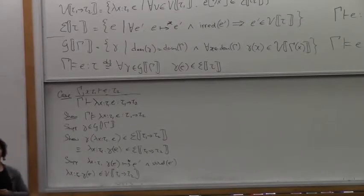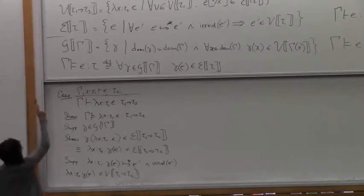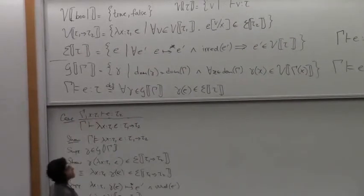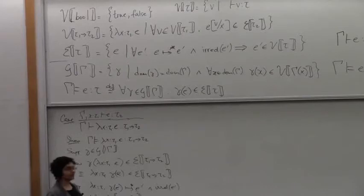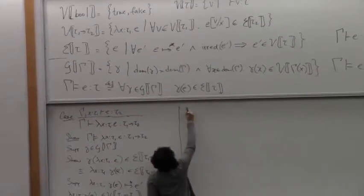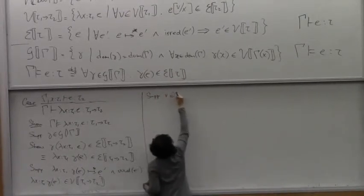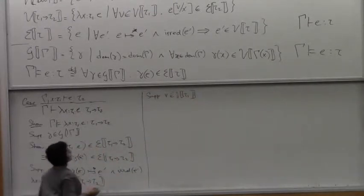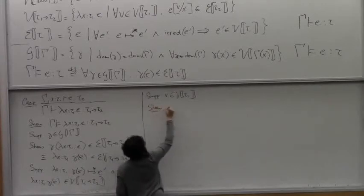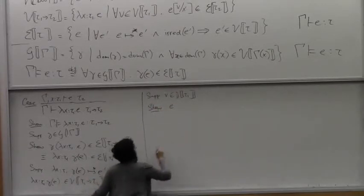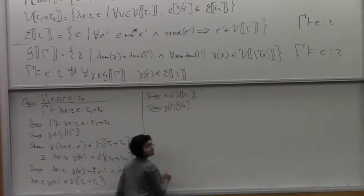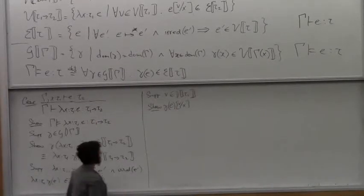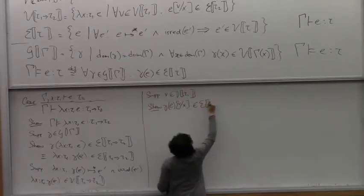So how do we show that? Let's look at the definition of V of tau 1 arrow tau 2. It says that you get to have a value v in V of tau 1. So suppose we are given a value in V of tau 1. We have to show that after beta reduction — when we have gamma e with v substituted for x — and we take the body of this lambda and substitute v for x, we have to show that that belongs to E of tau 2.